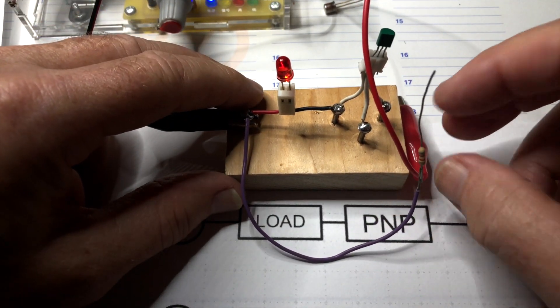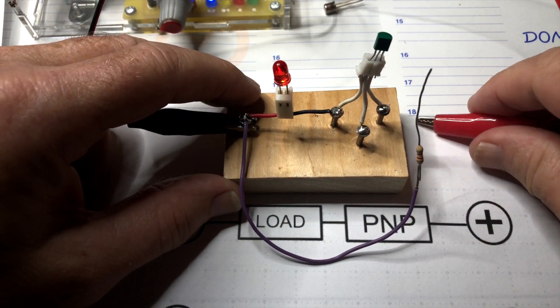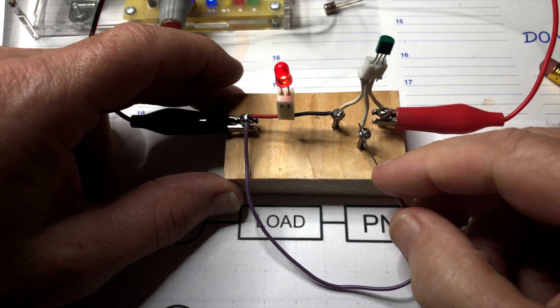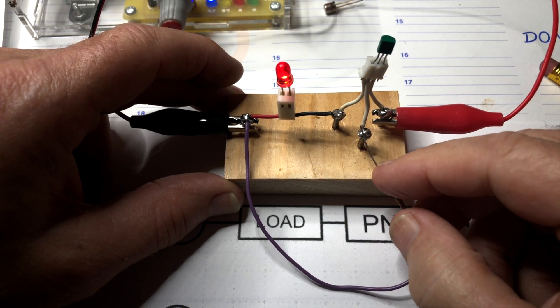Now I have connected the load to the negative side. I turn the LED around, I swap to the other transistor, and that works fine.